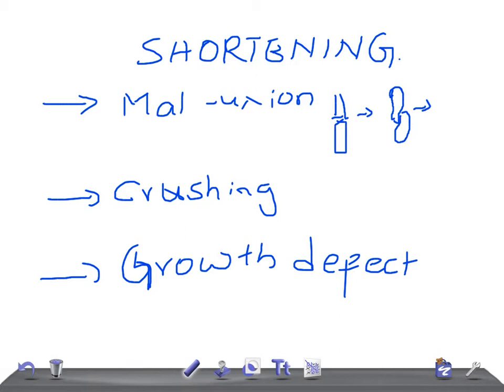In crushing, there is actual bone loss — you cannot replace that bone, which is why you see shortening. For growth defect, injury to the epiphyseal plates — the growth plates — means there is no growth, so the bone remains small.